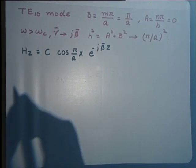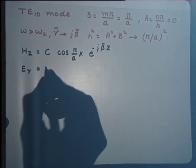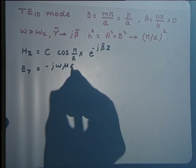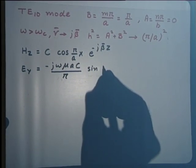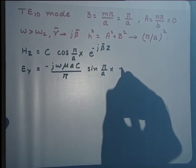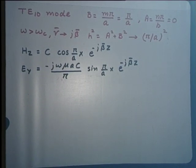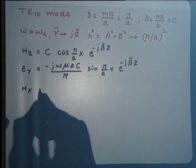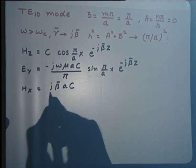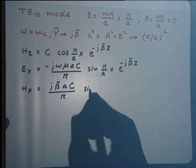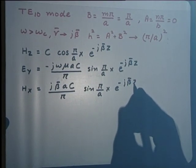Similarly, the other non-zero field expressions are: E_y equal to −jωμ·(a/π)·C·sin(πx/a)·e^(−jβ̄z), with that e^(−jβ̄z) factor present in all non-zero field expressions. And finally, H_x comes out to be jβ̄·(a/π)·C·sin(πx/a)·e^(−jβ̄z).